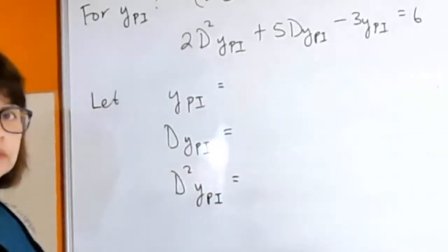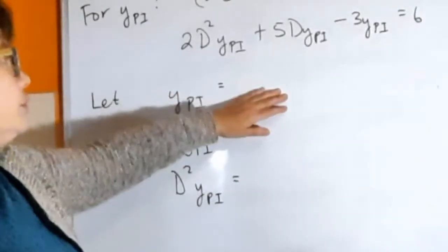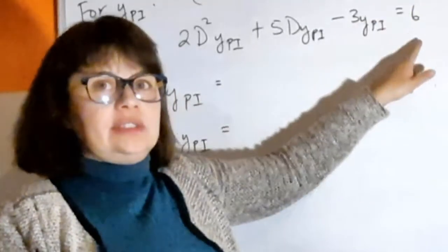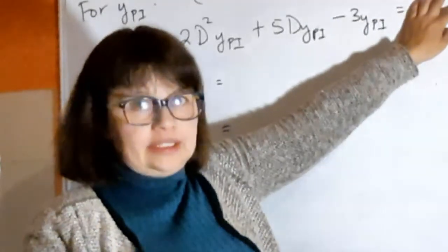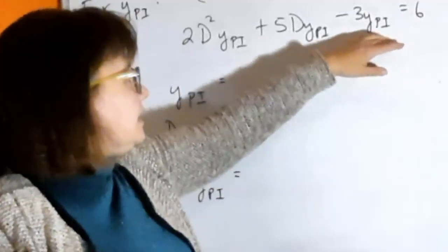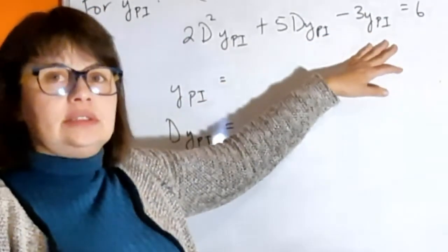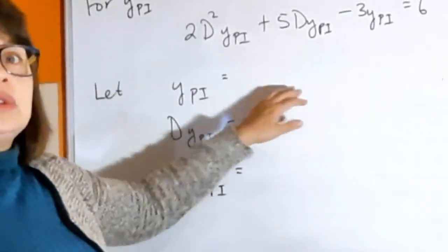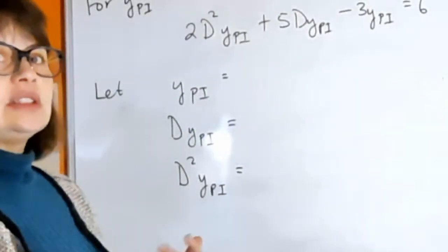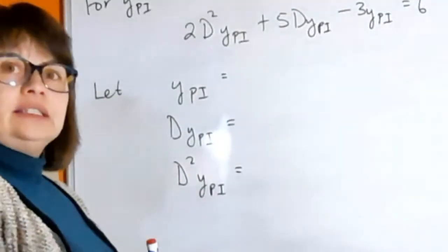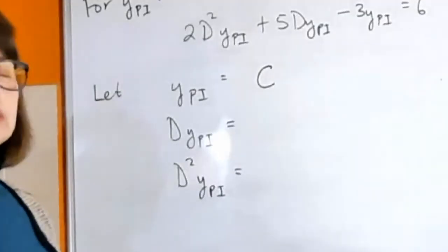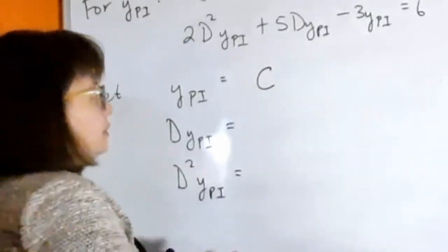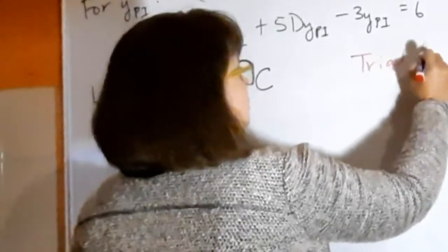We need to choose a form for ypi. It's important to know what type of function is on the right hand side — you have a constant there. So somewhere in your expression you need a constant as well. We choose a trial function, called a prowl function, and guess that ypi equals some constant C. You can label it whatever you want as long as it doesn't clash with other letters already used.